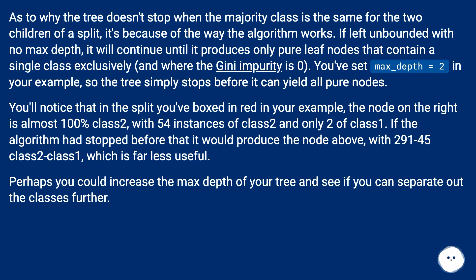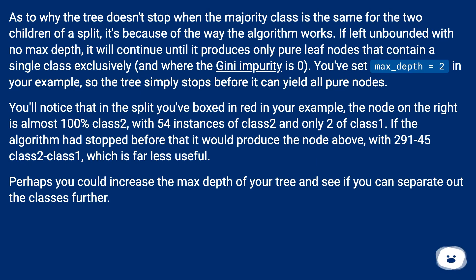You've set max_depth equals 2 in your example, so the tree simply stops before it can yield all pure nodes. You'll notice that in the split you've boxed in red, the node on the right is almost 100% class 2, with 54 instances of class 2 and only 2 of class 1. If the algorithm had stopped before that, it would produce the node above with 291 to 45 class 2 to class 1, which is far less useful.